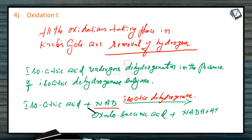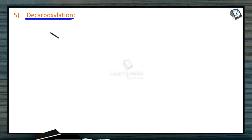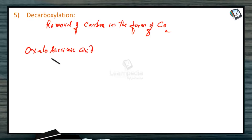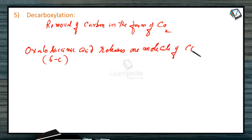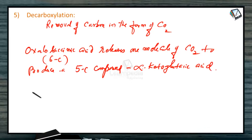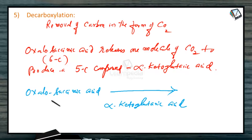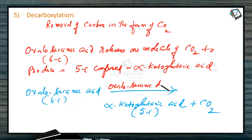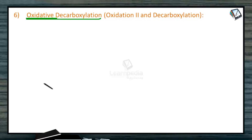The next reaction is decarboxylation, meaning removal of carbon in the form of carbon dioxide. Oxalosuccinic acid is a 6-carbon compound. This acid releases one molecule of carbon dioxide to produce a 5-carbon compound, alpha-ketoglutaric acid. The reaction is: oxalosuccinic acid, with loss of CO₂, gives alpha-ketoglutaric acid. Since it is decarboxylation, the enzyme is oxalosuccinic decarboxylase.